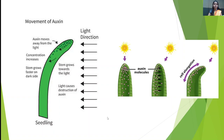The picture shows movement of auxins. Auxin moves away from the light. The stem grows faster on the dark side and grows towards the light. Light causes destruction of auxins. The concentration of auxin increases on the darker side, causing cell elongation on that side.